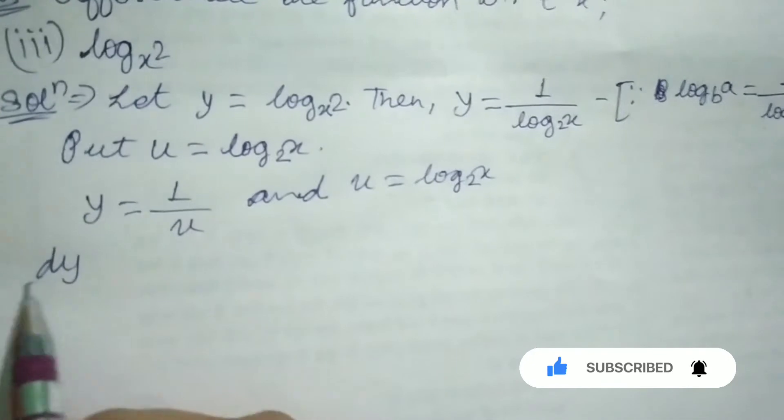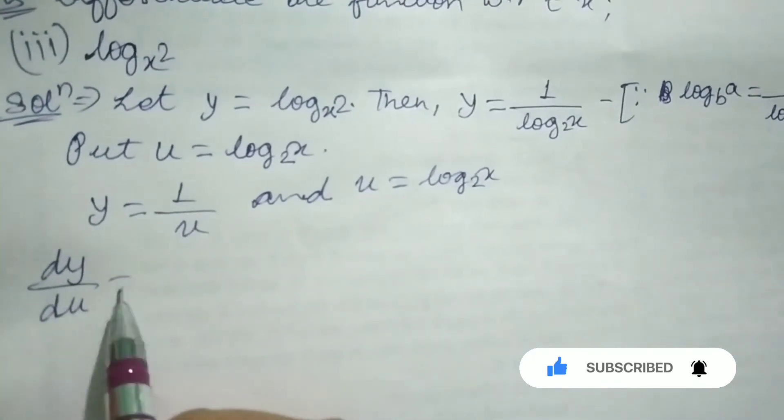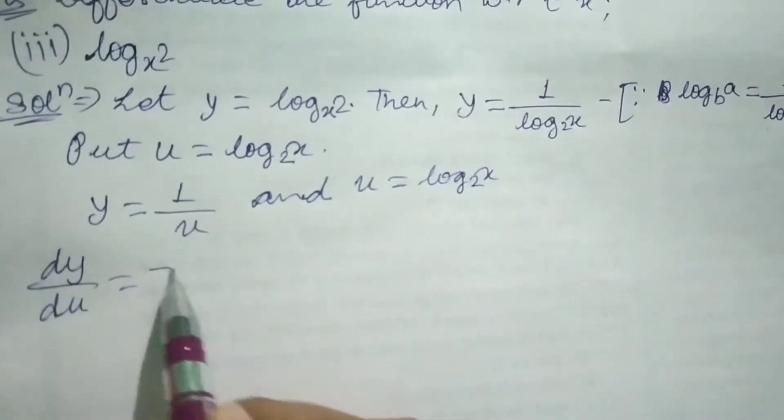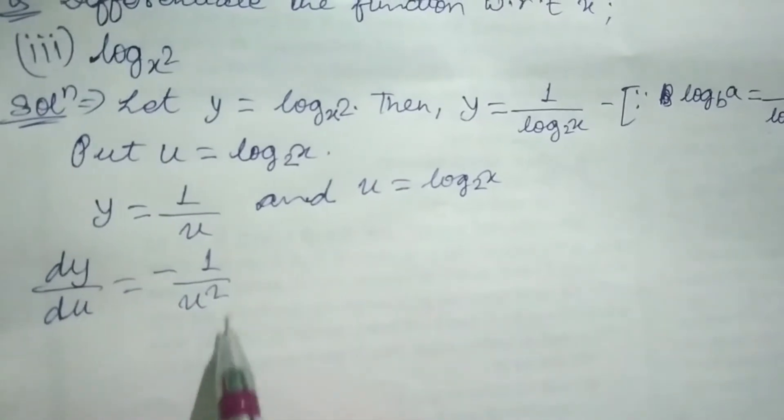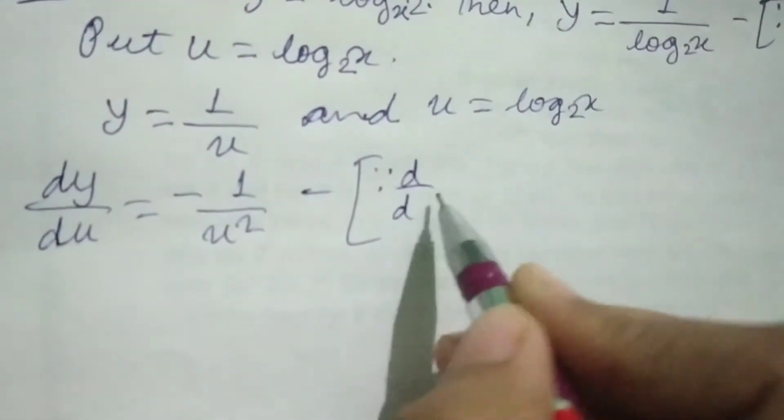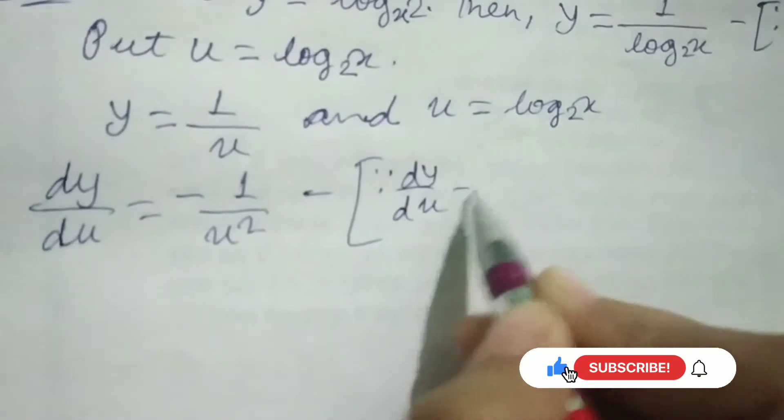Now differentiate y with respect to u. So dy/du will be minus 1 over u squared.